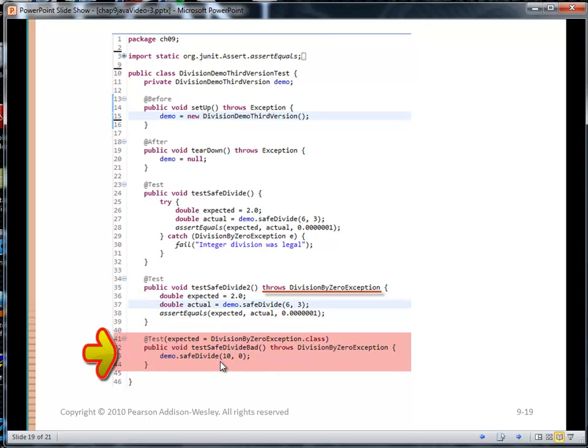The latter one in pink is the one I wanted to focus on. Here I'm going to call safe divide with 0 for the denominator. So safe divide should throw a division by 0 exception. So up here on the test annotation, I have the expected attribute equal, I'm giving it the name of the class that I expect to be thrown. And I'm expecting division by 0 exception class to be thrown. If it is thrown, I'll get a green bar. If it's not thrown, I'll fail.